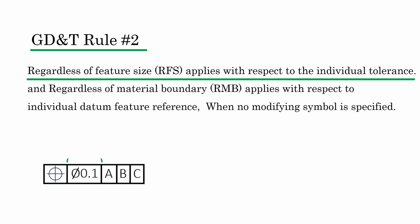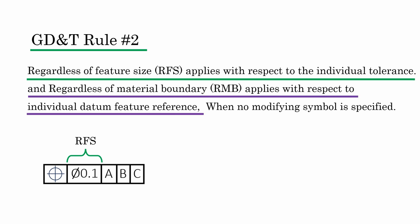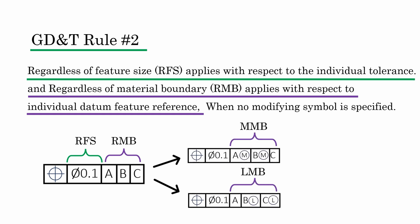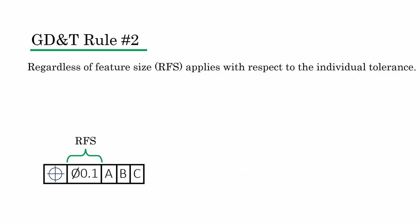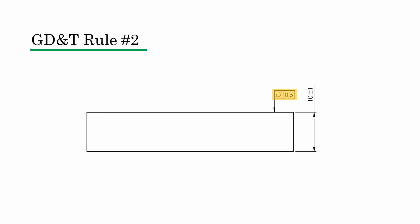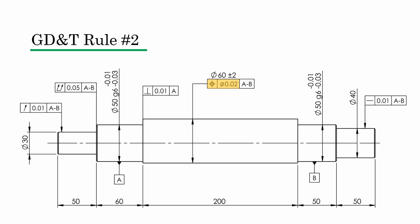In this video we focus on regardless of feature size as applied to individual tolerance. The concept of regardless of material boundary with respect to datum feature reference is more advanced and will be covered in a future lesson on datums. Rule 2 essentially defines the default condition in the feature control frame: regardless of feature size applies by default when no modifying symbol — MMC or LMC — is present. This means when a flatness tolerance is applied to a surface, the flatness tolerance is independent of the size tolerance. Almost all geometric controls — position, straightness, perpendicularity, circularity, runout, total runout — will be independent of size variation.